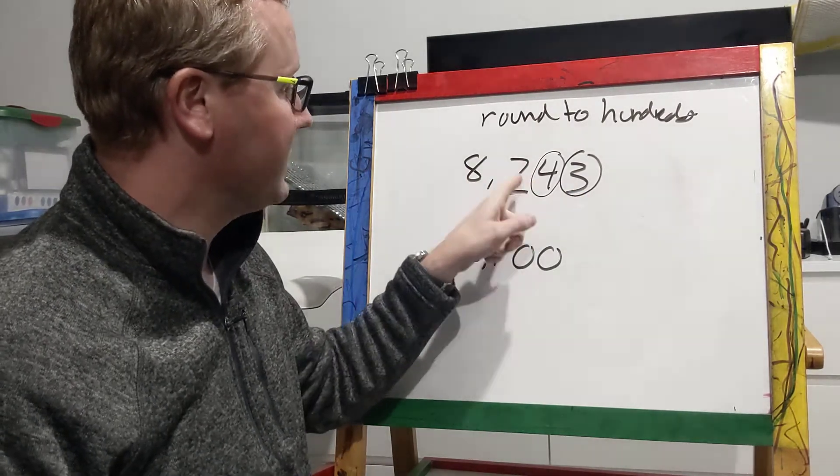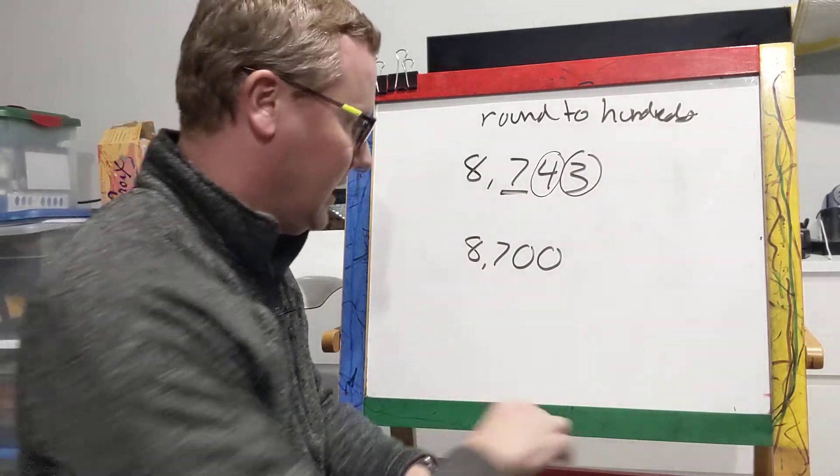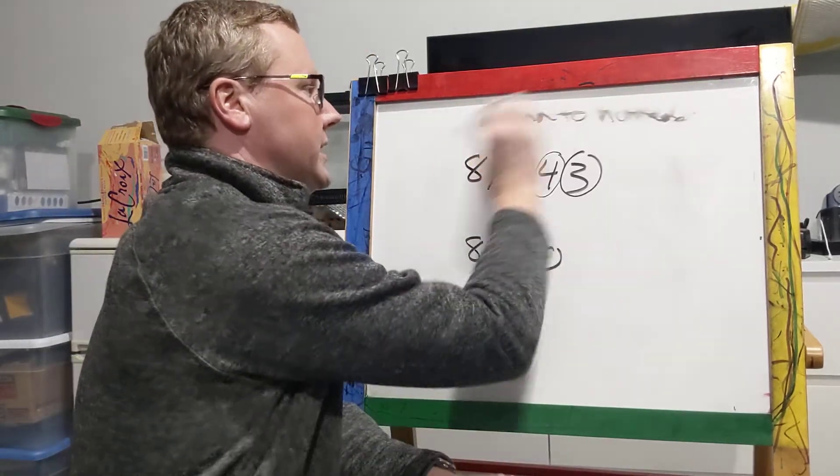My four turns to zero, three turns to zero. So eight thousand seven hundred forty three, when you round to the hundreds place, rounds to eight thousand seven hundred. Let's try one more really quick.